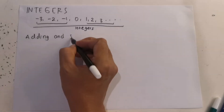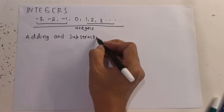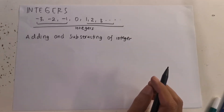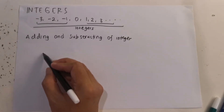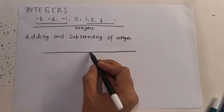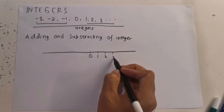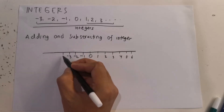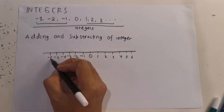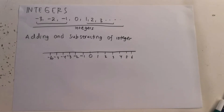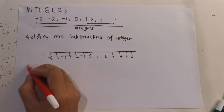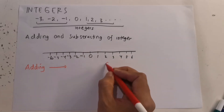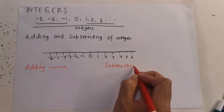Adding and subtracting of integers — the best thing that you can do if you want to calculate adding and subtraction of integers, you can use the number line. On the number line we have 0, 1, 2, 3, 4, 5, 6 to the right, and negative 1, negative 2, negative 3, negative 4, negative 5, negative 6 to the left. The rule to remember: for adding, you move to the right; for subtracting, you move to the left.